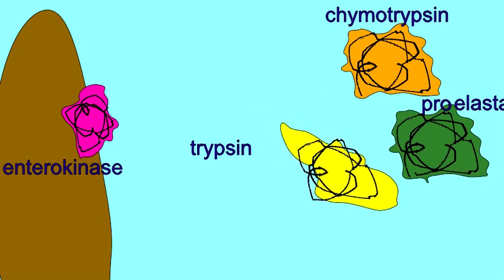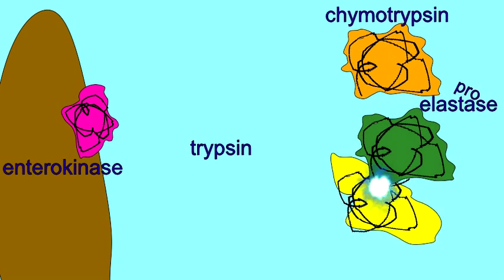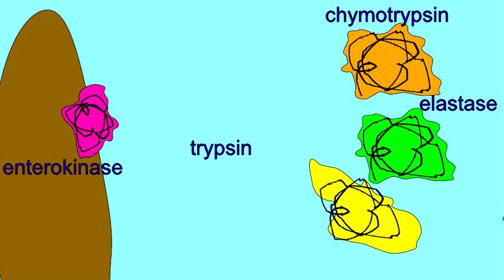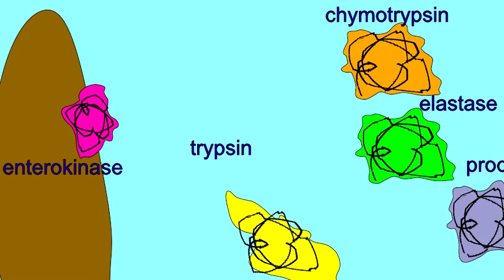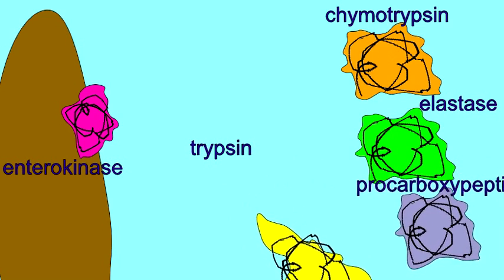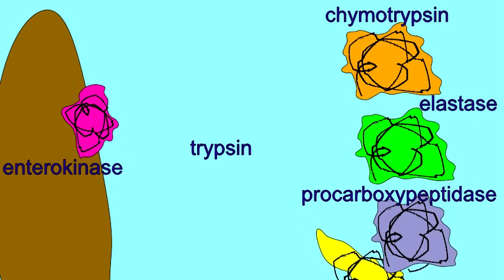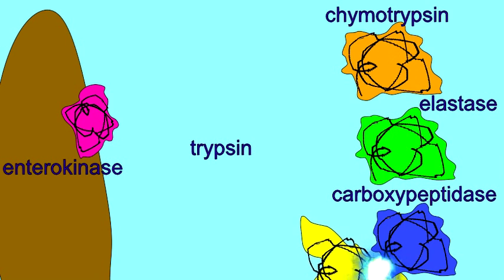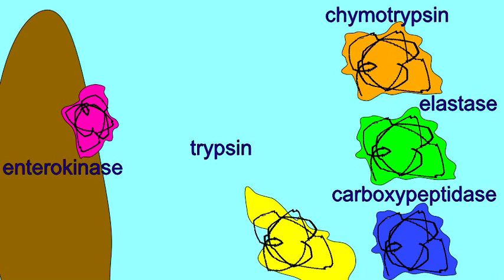Trypsin converts the inactive form of proelastase into the active form of elastase. Trypsin converts the inactive form of procarboxypeptidase to the active form of carboxypeptidase and activates the enzyme prolipase as well.